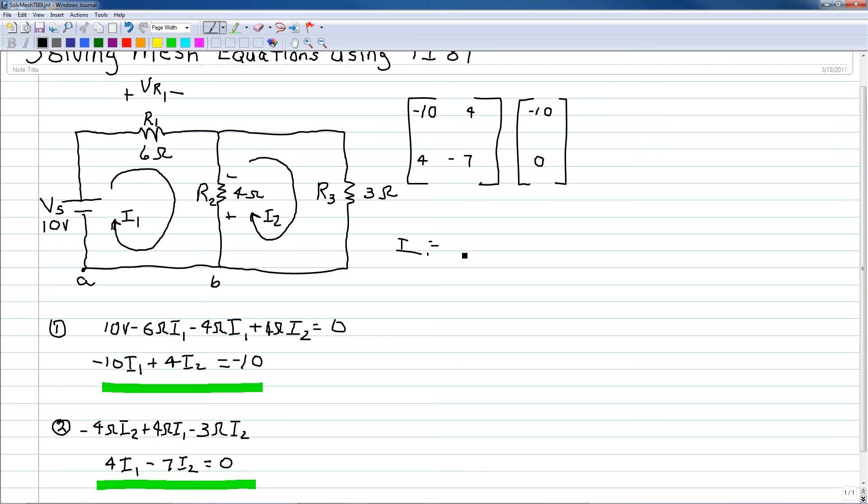So I1 is 1.3 amps and I2 is equal to 741 milliamps.